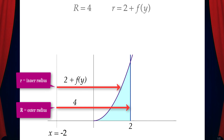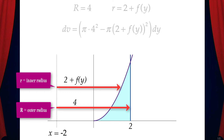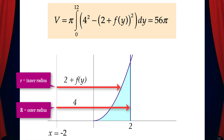The outer radius is 4 and the inner radius is 2 plus f of y. Now we can write dv, the volume of one washer, which is pi times 4 squared minus pi times the quantity of 2 plus f of y squared dy. The integral that represents the volume of the solid is pi times the integral from 0 to 12 of 4 squared minus the quantity of 2 plus f of y squared dy, and we can solve this with a calculator to get 56 pi.